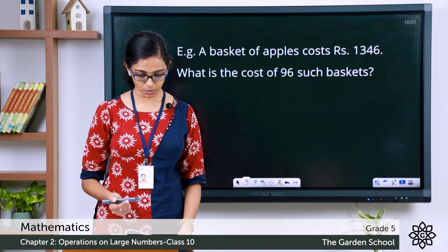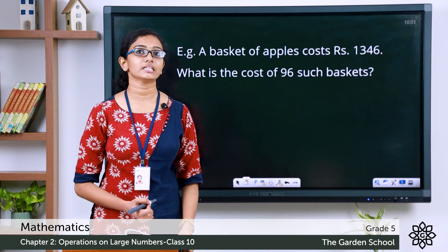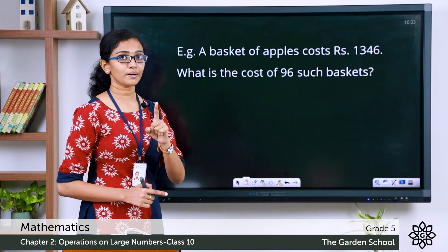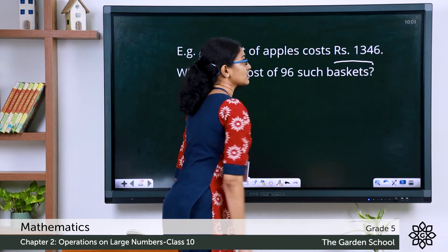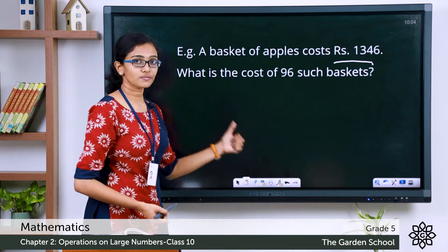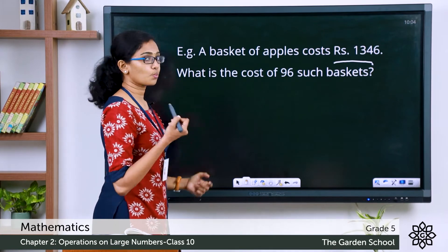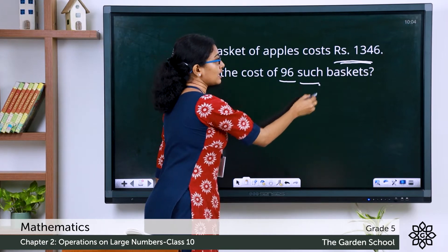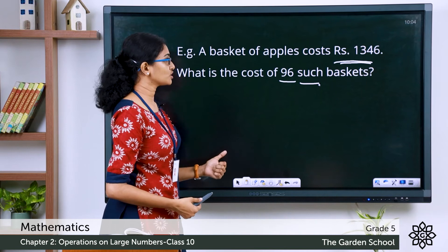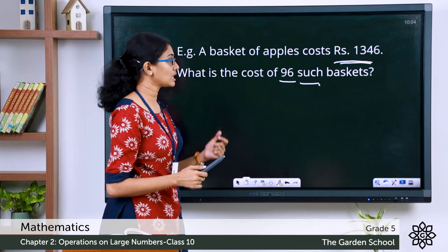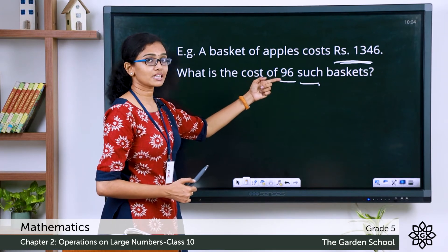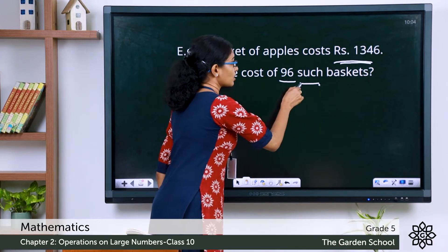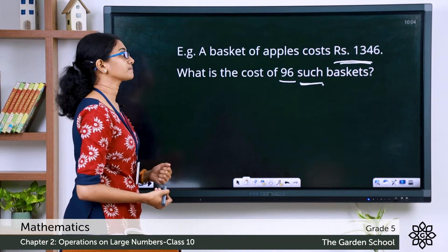Look at this question: a basket of apples costs rupees 1346. What is the cost of 96 such baskets? In the question, you are given the cost of one basket of apples — that is rupees 1346 — and you are asked to find the cost of 96 such baskets. Did you notice the keyword 'such'? That's a clue to identify this as a multiplication word problem.